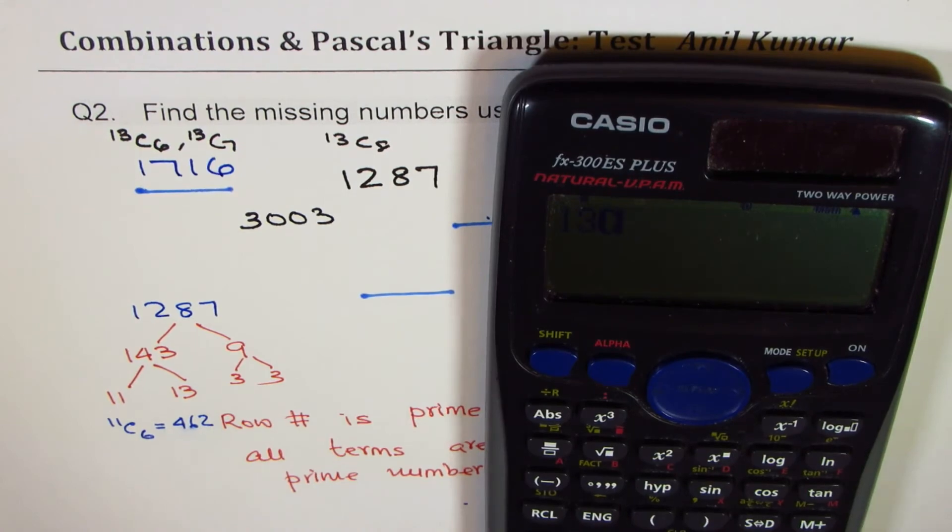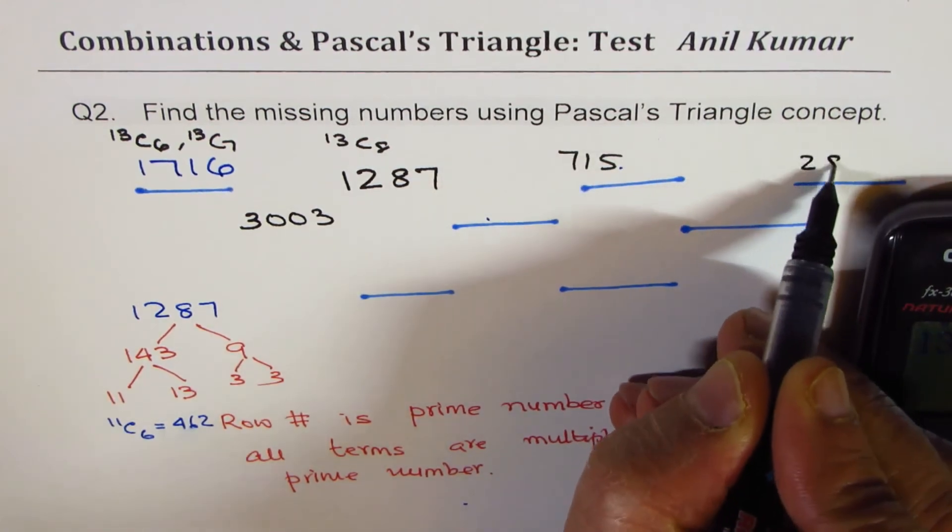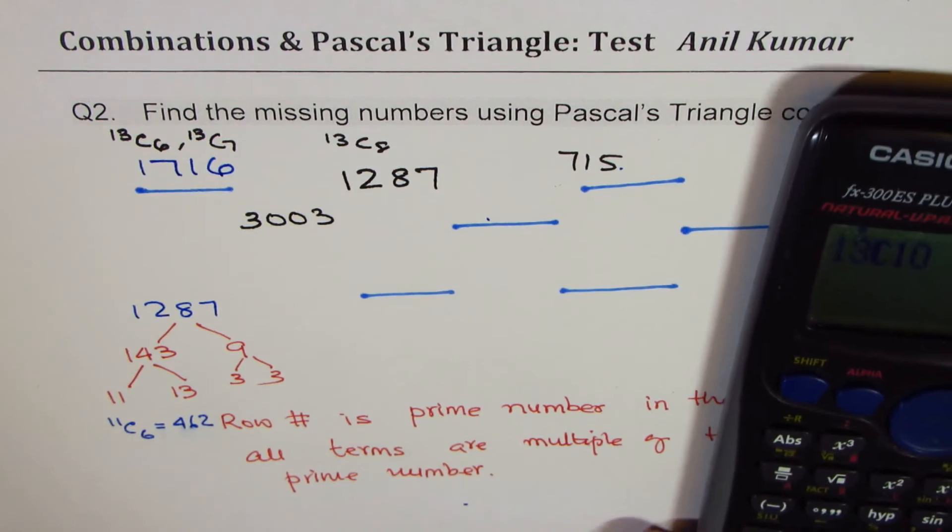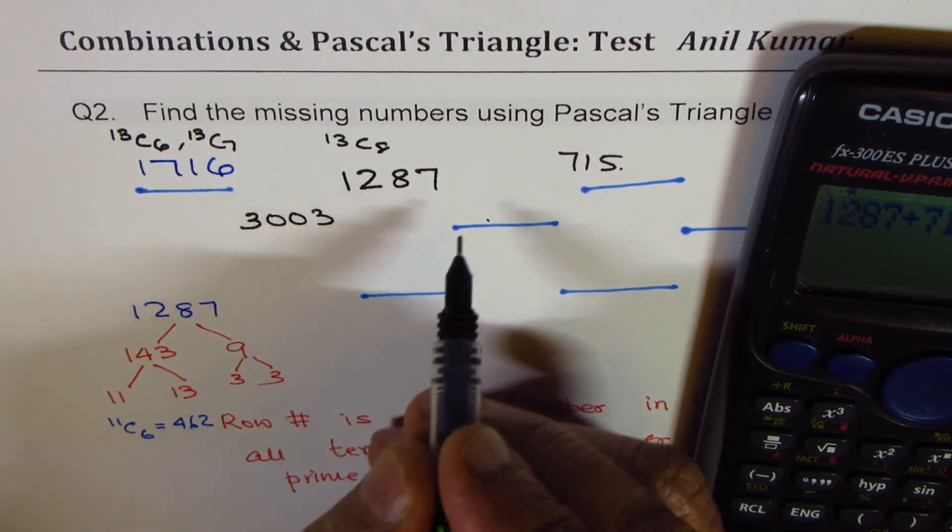Now it is very simple. You have to use calculator 286 and get your answer. So 286. Anyway, you can combine these terms. So now it is a simple job. So we have 1287 plus 715 equals to 2002.